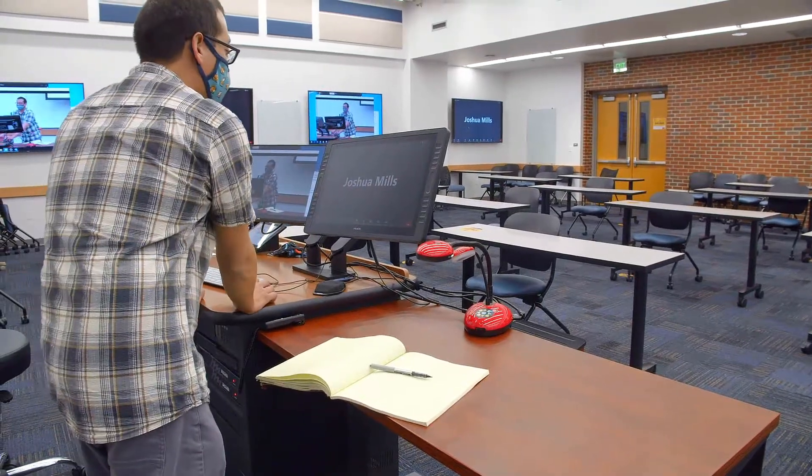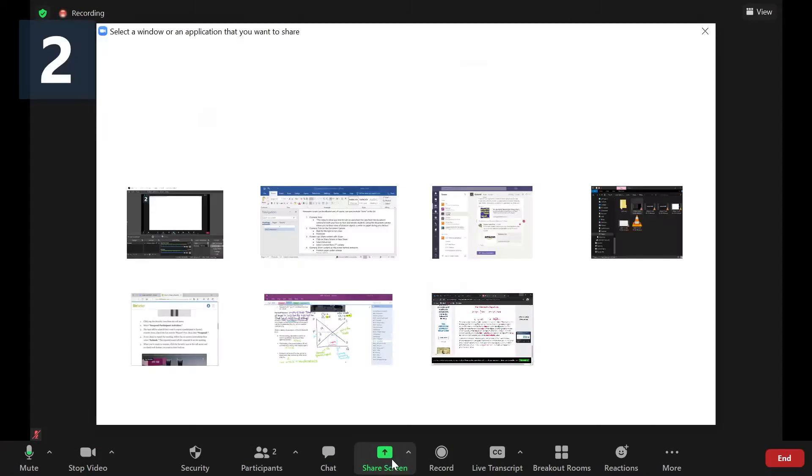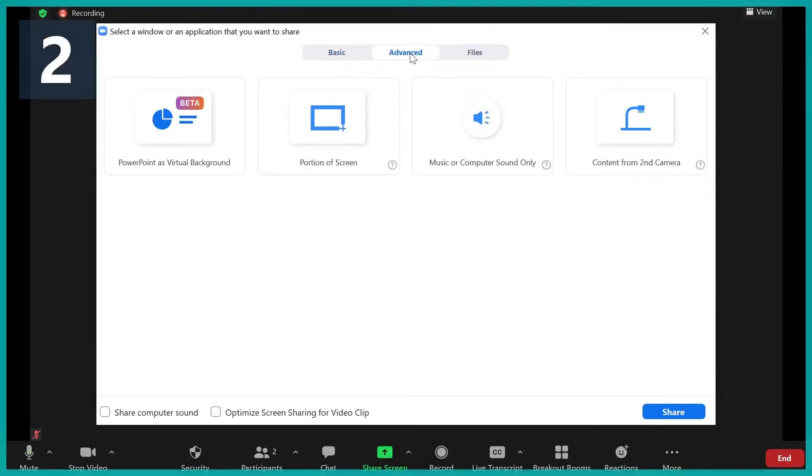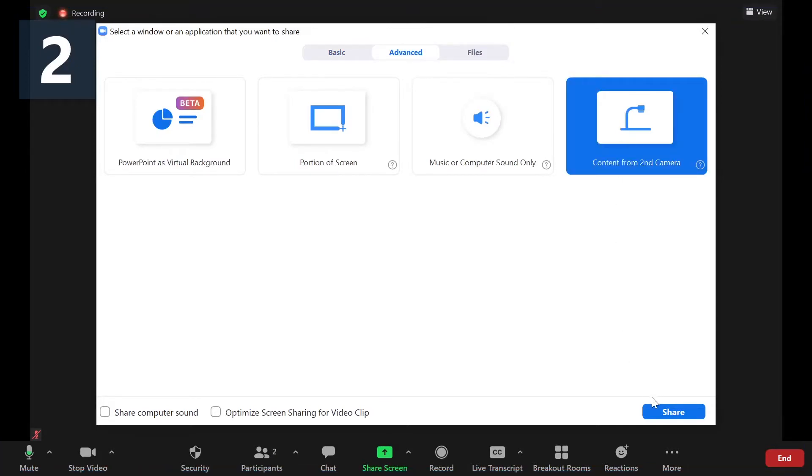And then within Zoom, you'll click on share screen, choose the advanced tab and choose content from second camera and then click share.